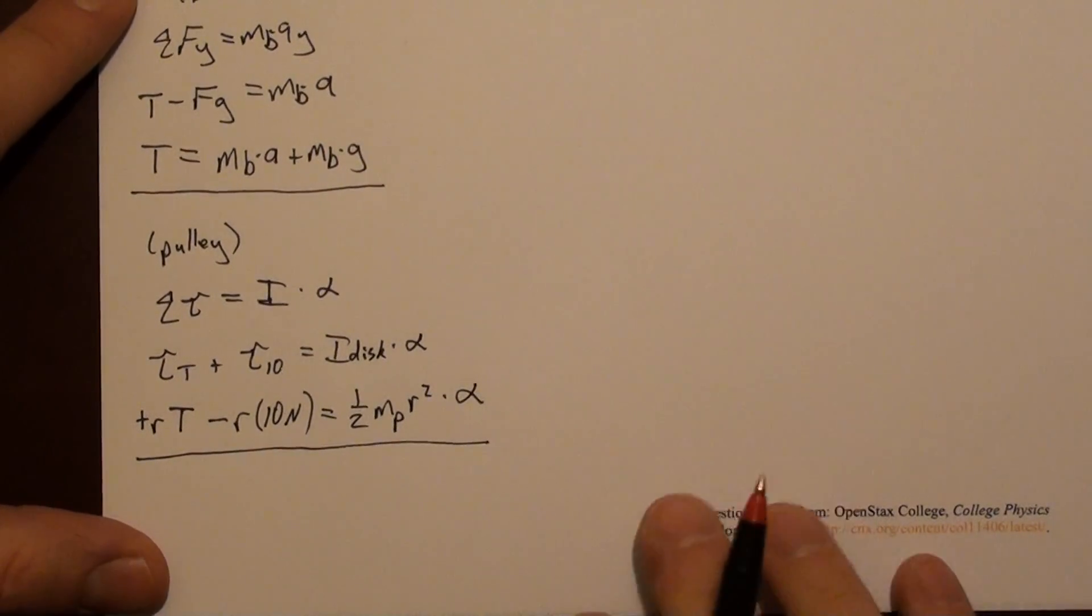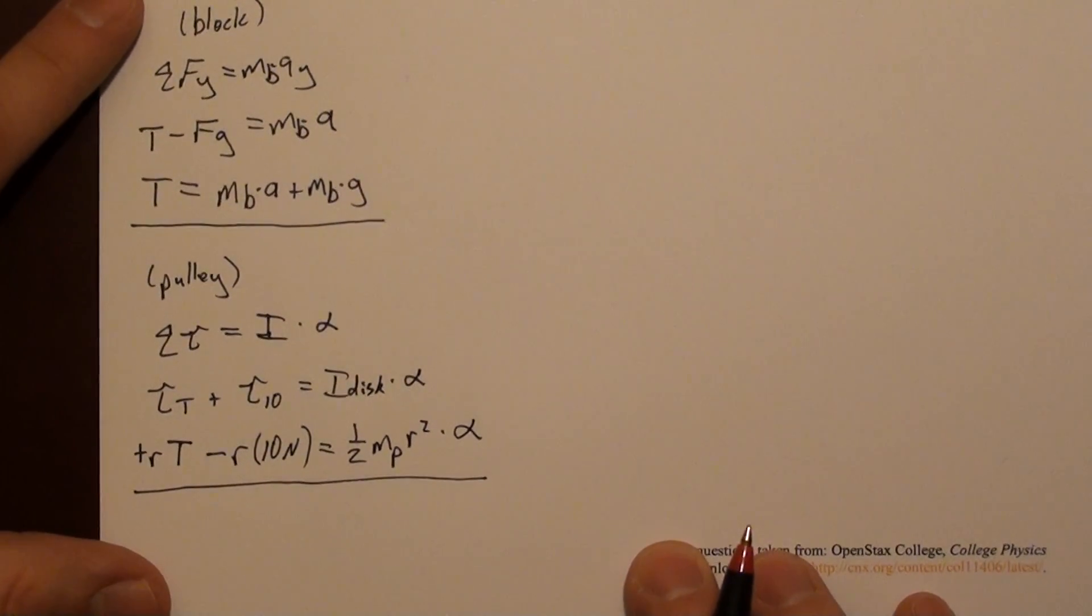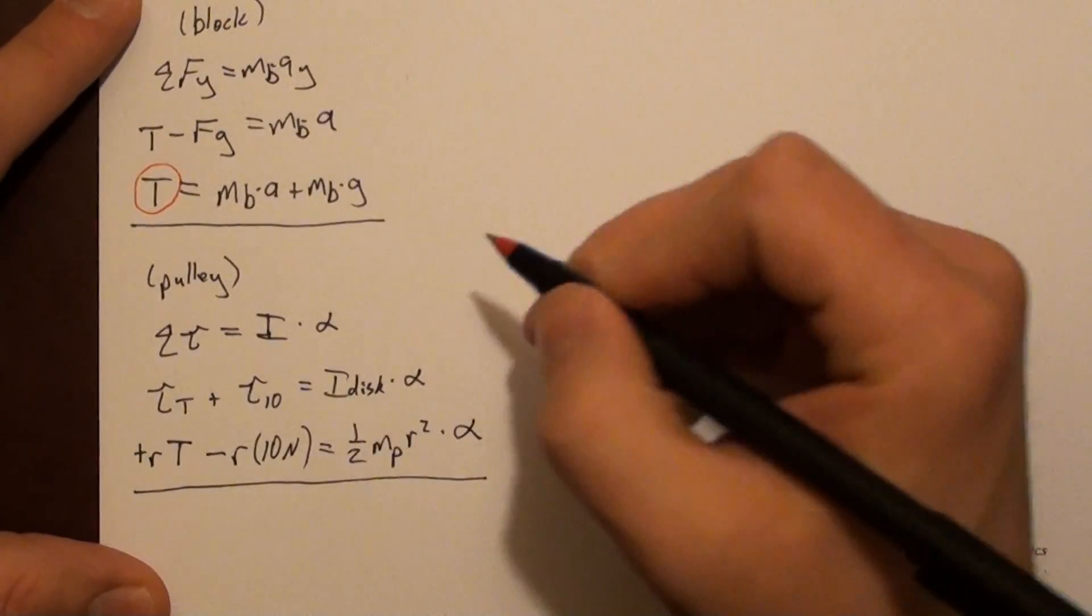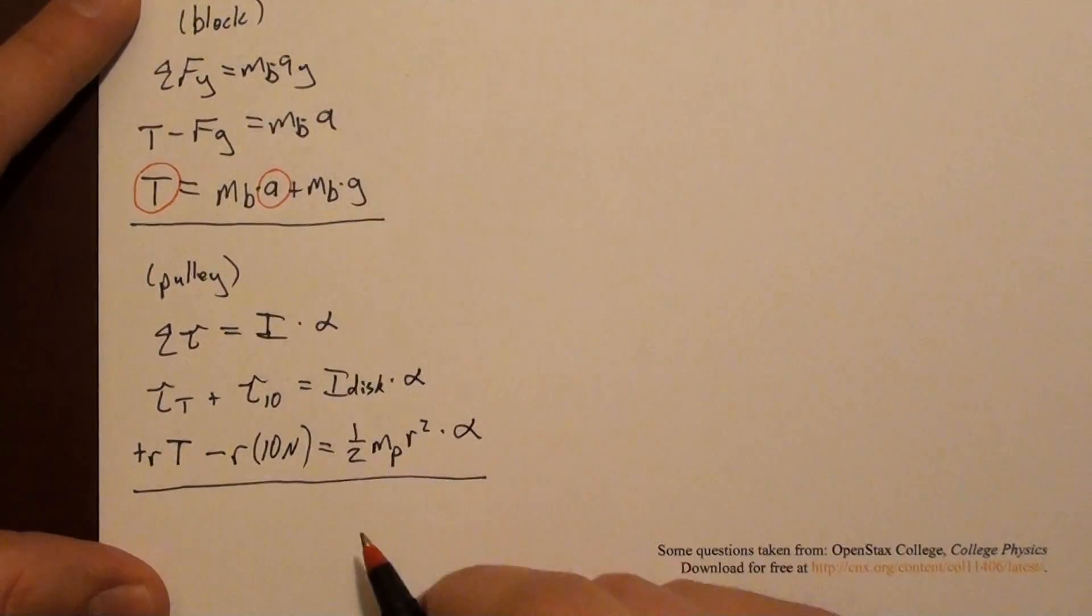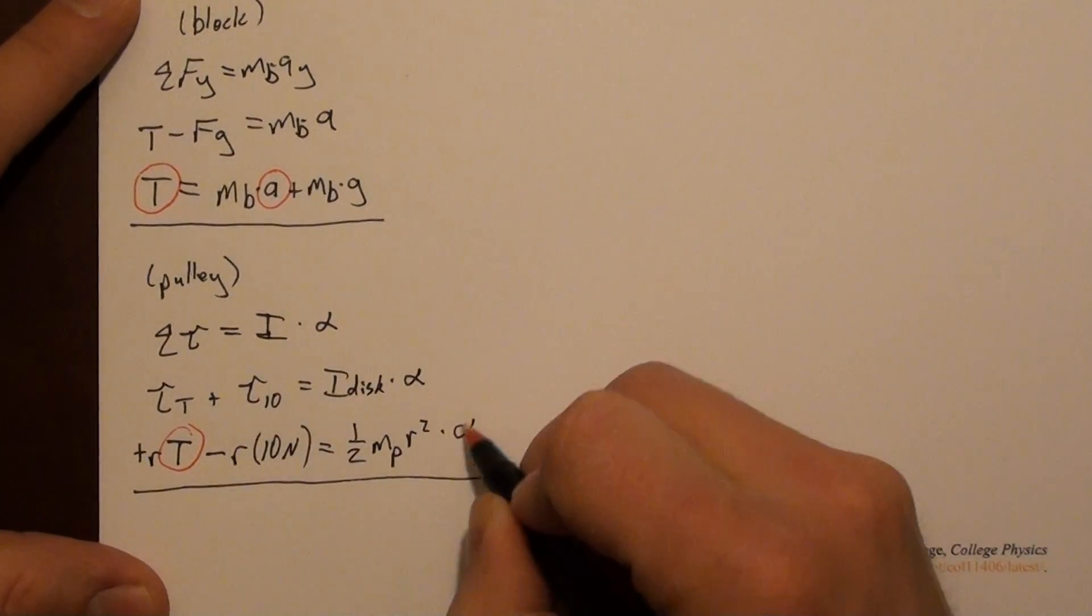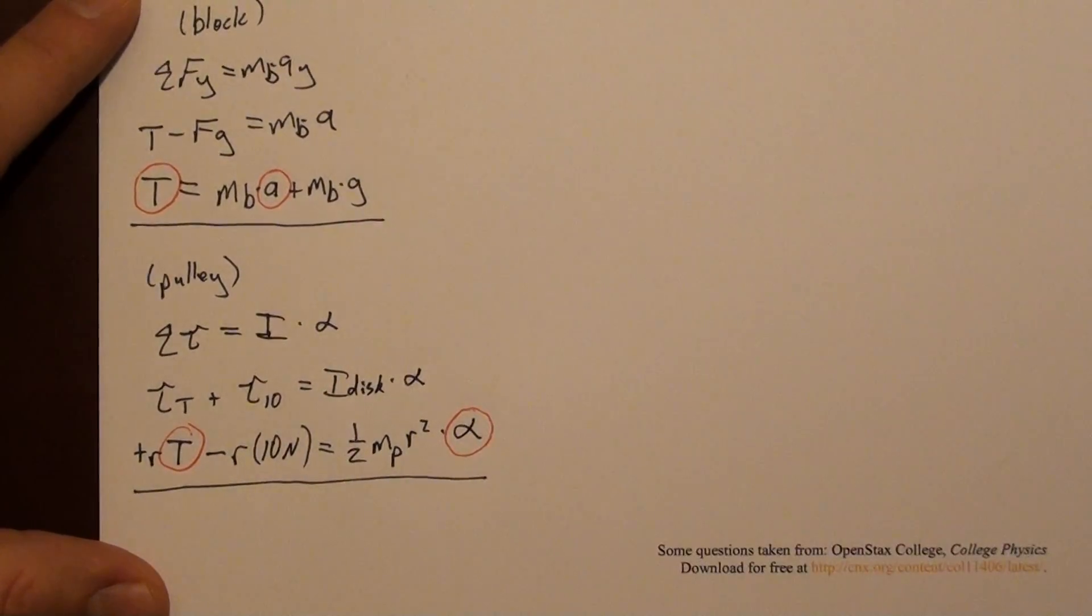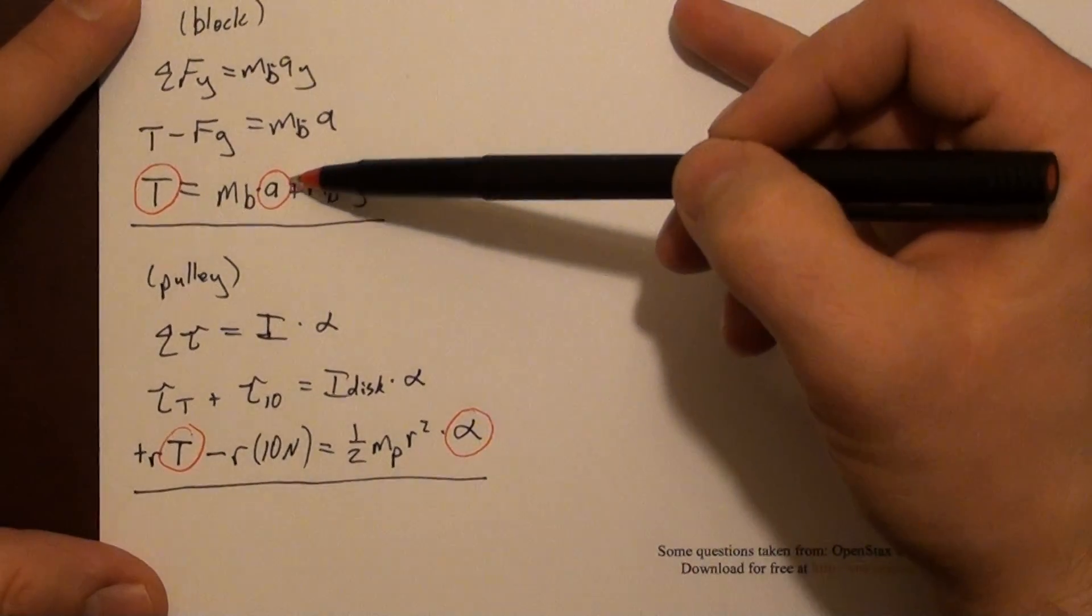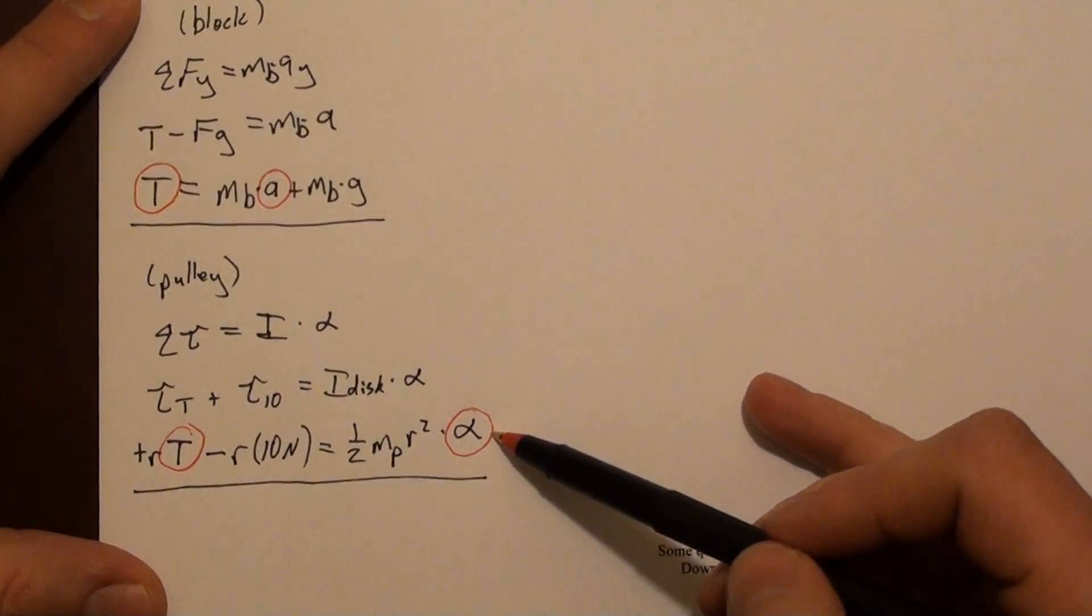So let's look at these two equations and identify what we do not know. We don't know the tension. We don't know the acceleration, but that's what we're solving for. Again, we don't know tension, and we don't know alpha. So that's two equations, but three unknowns. So we need another equation. And what's going to help us here is to recognize that acceleration of the block and the angular acceleration of the pulley are related, because they're connected by this rope.